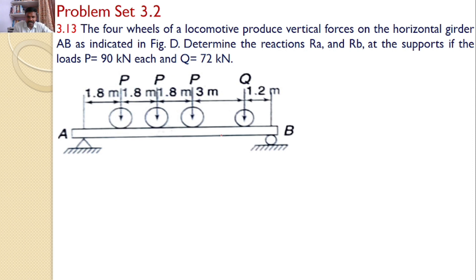So, this is the girder AB supported with hinged support and roller support. Our interest is to find the reactions at A and B because of these loads P and Q. P and Q values are given.